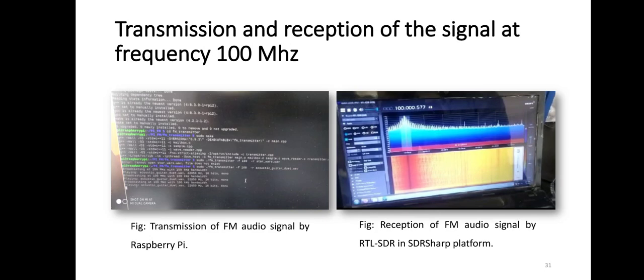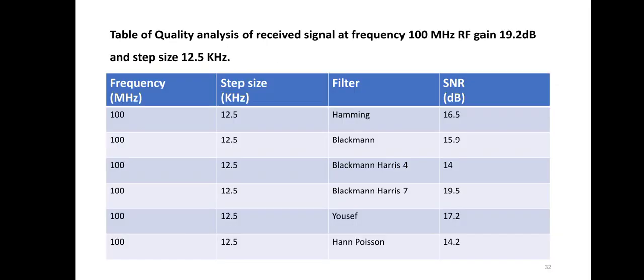Using the transmitter setup, we transmitted a signal at 100 MHz as shown in the left figure, and we received the same signal using our receiver setup as shown in the right figure. In this table, we performed a quality analysis of the signal generated by us.